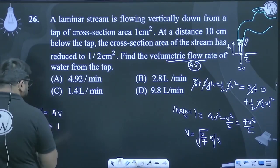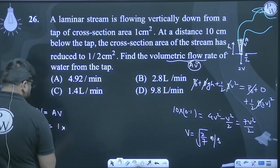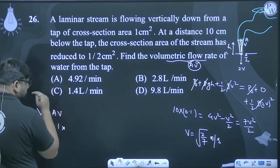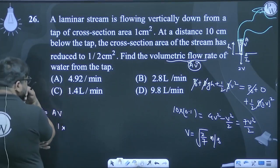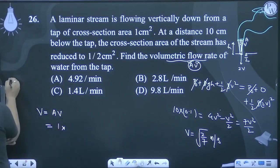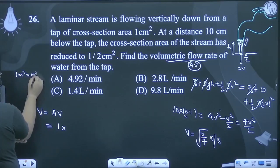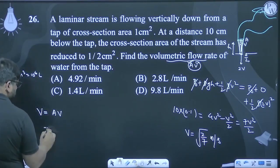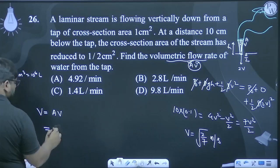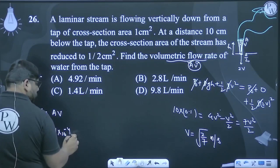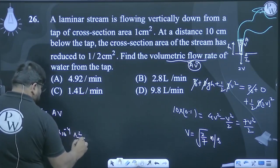So this becomes 1 into 10⁻⁴ multiplied by 2/√7.